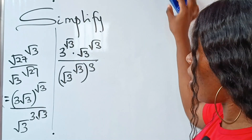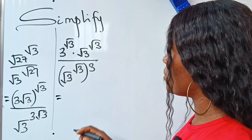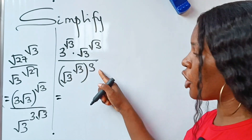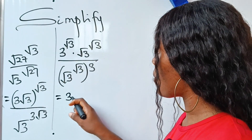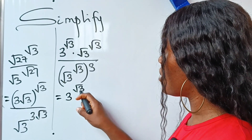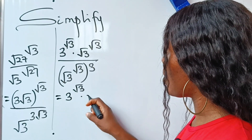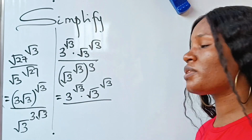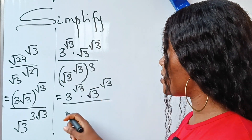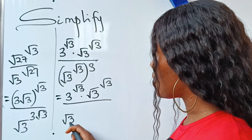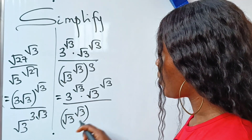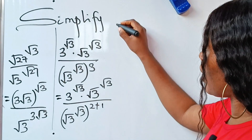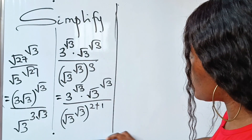So the numerator becomes 3 raised to the power of root 3, multiplied by root 3 raised to the power of root 3. I will express the exponent root 3 cubed as root 3 raised to the power of 2 plus 1.